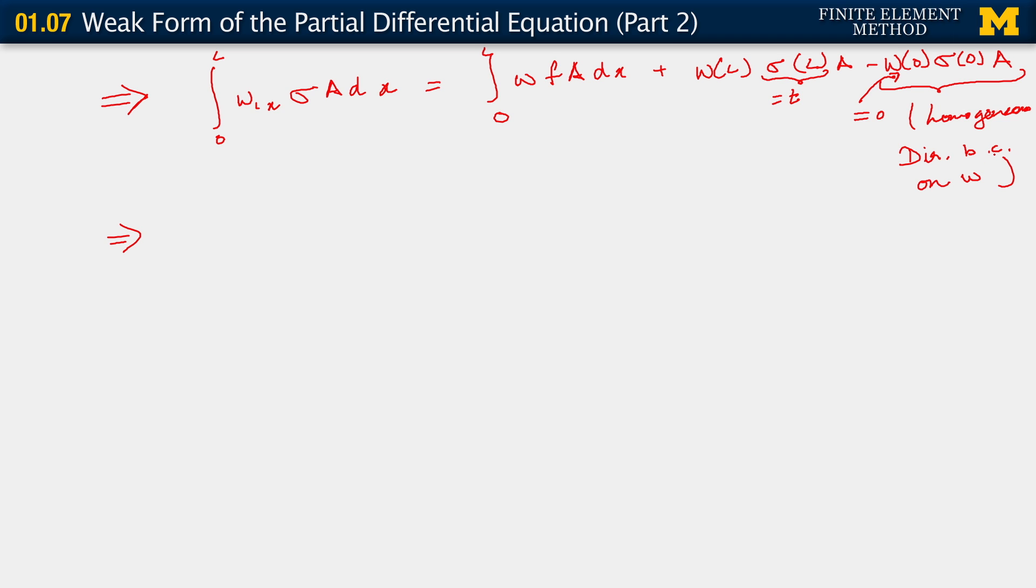DIR is short for Dirichlet. The fact that sigma at L equals t comes from the Neumann boundary condition on the strong form. So when we do all of this, we get our final weak form.